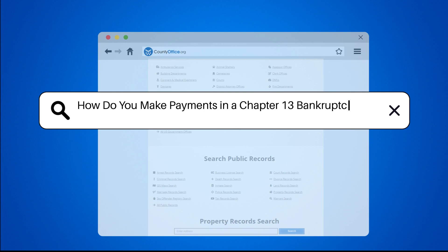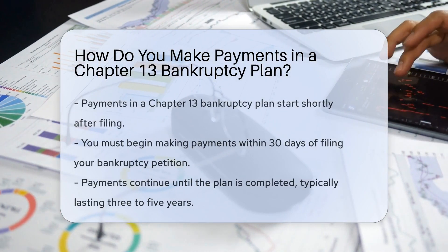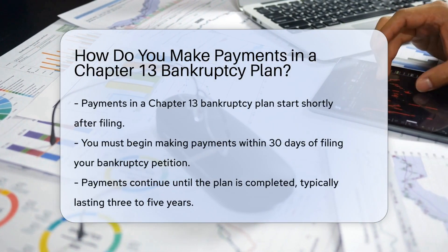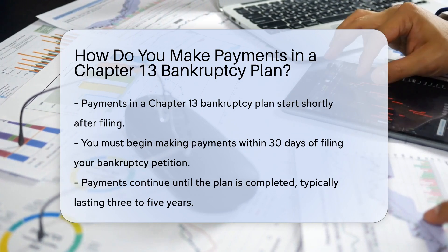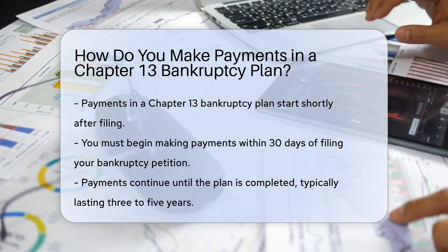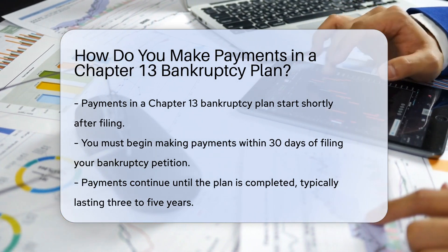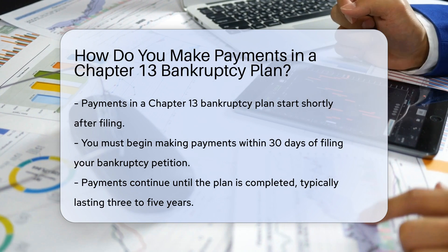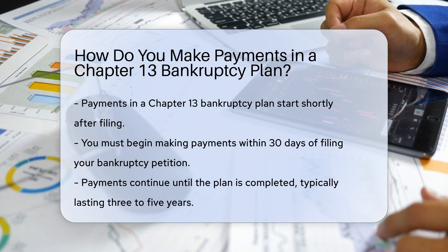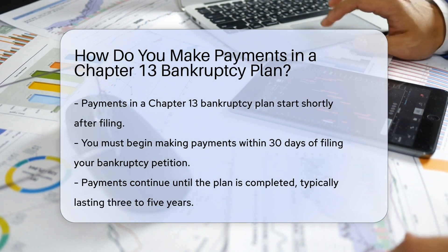How do you make payments in a Chapter 13 bankruptcy plan? When do payments start? Payments in a Chapter 13 bankruptcy plan begin shortly after filing. You must start making payments within 30 days of filing your bankruptcy petition, even before the court has confirmed your plan.